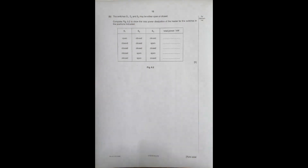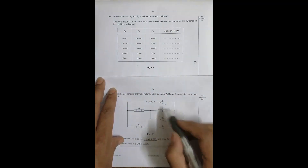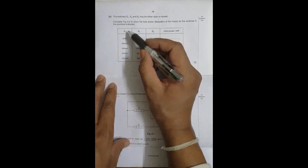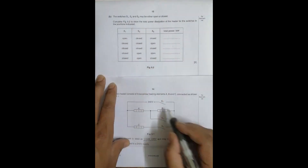In the second part, the switches S1, S2, and S3 can be open or closed. We have to complete the table — figure 6.2 — to show the total power dissipation of the heater for the switches in the positions given. Columns are given for S1, S2, S3, and the total power.